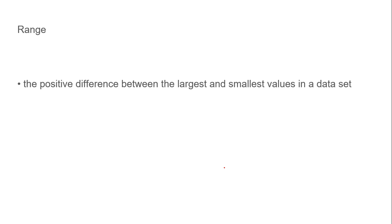The range is the difference between the highest number and the lowest number. So if the numbers fall between 2 and 10, the range would be 8. The range is the difference between the largest and the smallest values.